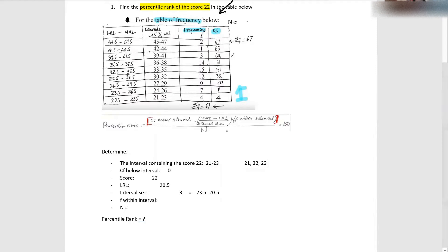There's another way you can find the interval size: you can list all the items in the interval and there are three numbers, so the interval size is three as well. You can find it either way — list the items, or take the upper limit minus the lower limit.